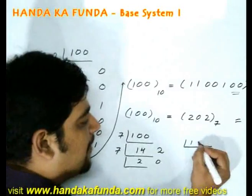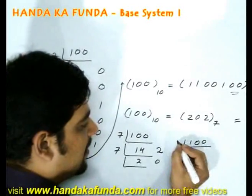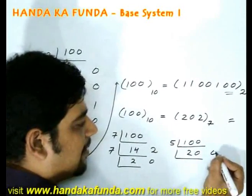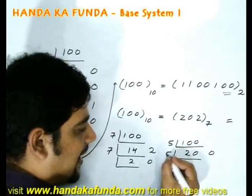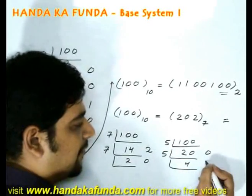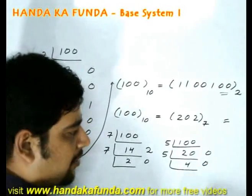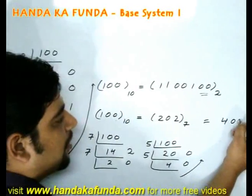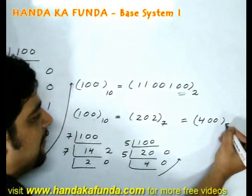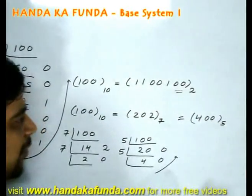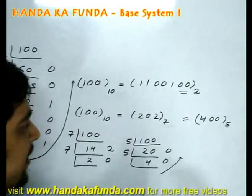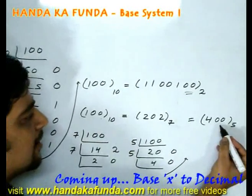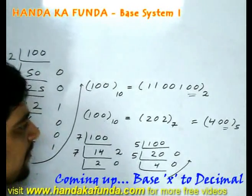If I convert 100 to base 5, I first divide by 5 and get 20 with a remainder of 0. Dividing again by 5, I get 4 with a remainder of 0. So the conversion gives me 4, 0, 0 in base 5. Note that 100 is exactly divisible by 5 twice, which is why I have two zeros.